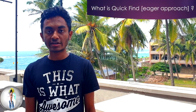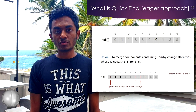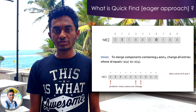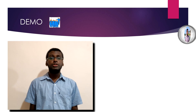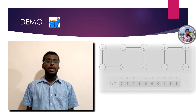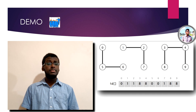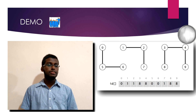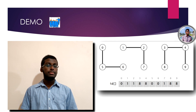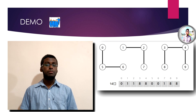Now let's look at the quick-find demo. For the Union command, to merge components containing p and q, we should replace the ID of p by the ID of q. I will be showing the demo file. As you can see in the slide, three separately connected components are displayed: {0, 5, 6}, {1, 2, 7}, and {8, 3, 4, 9}. They are separately connected components.